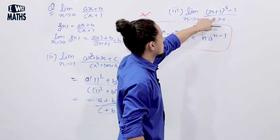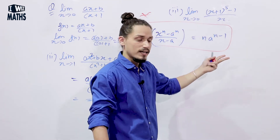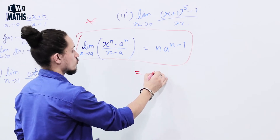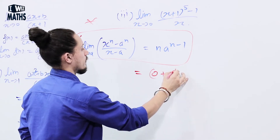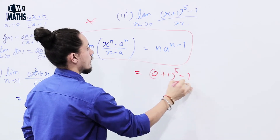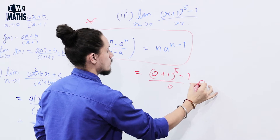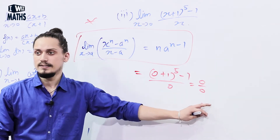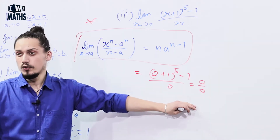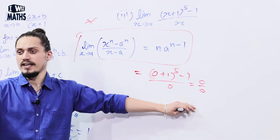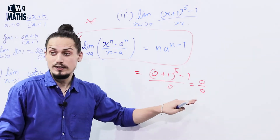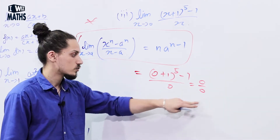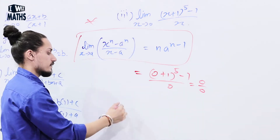The last example: lim (x → 0) of ((x+1)⁵ - 1) / x. Putting x = 0 gives (0+1)⁵ - 1 / 0 = 0/0 form — this is a no-no. Just like you don't want to write your name in a death note, we don't want this in the chapter of limits. So we'll have to substitute.